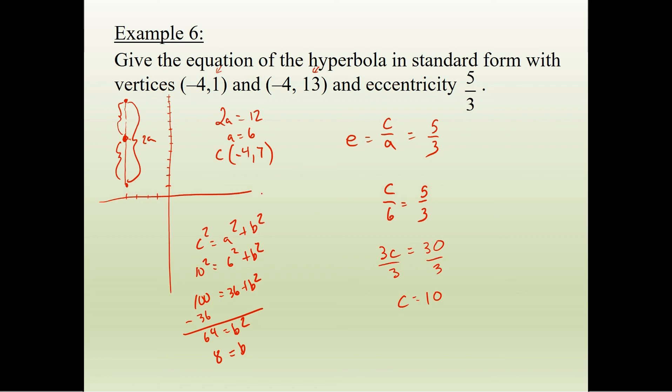So now we know that our transverse axis is our y-axis. So it's going to be y minus k squared over a squared minus x minus h squared over b squared equals 1. So y minus 7 over 36. We know that a was equal to 6, so 6 squared is 36. Minus x minus h, but h is negative 4. So plus 4 squared over b squared, which is 64, equals 1.